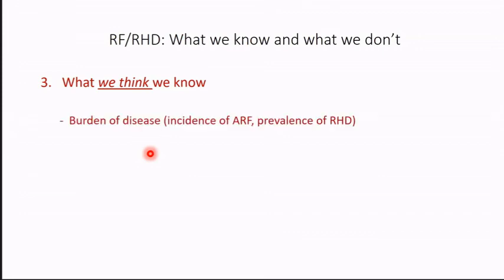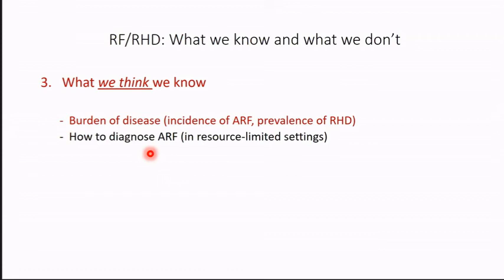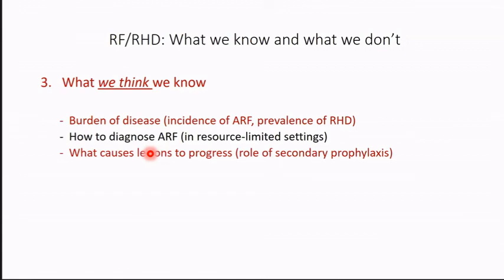We really don't know what the burden of disease is. We are relying solely on the Global Burden of Disease data, and I'll show you some data on why these may not be good estimates. We don't know how to diagnose acute rheumatic fever in resource-limited settings because the criteria originally developed in the United States were resource-intensive. As of now, there's really no way of securely diagnosing acute rheumatic fever. We also don't know what causes lesions to progress.